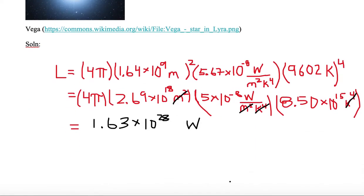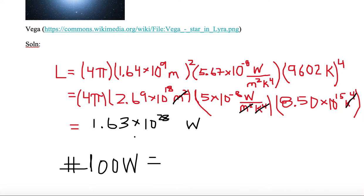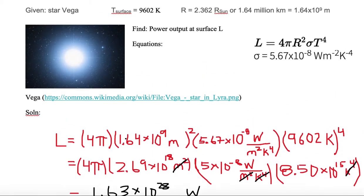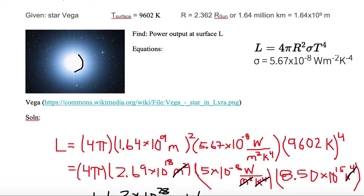That is an enormous wattage. To put it in perspective, let's convert to equivalent 100-watt light bulbs. Dividing 1.63 times 10 to the 28th watts by 100 (which is 10 to the 2nd) gives 1.63 times 10 to the 26th. So we would need 1.63 times 10 to the 26th 100-watt light bulbs to equal the luminosity at the surface of star Vega.